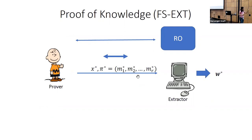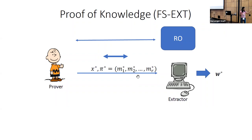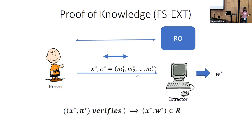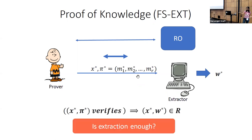We want an extractor who has access to the prover and initiates an interaction with the prover. The extractor is also sometimes responsible for simulating the random oracle queries the prover might make. It takes the final forgery — the statement and proof pi-star — and outputs a witness such that if the final proof verifies, the witness is a valid one.